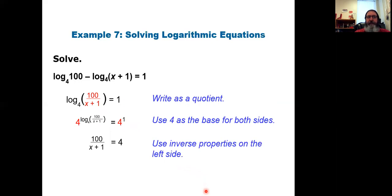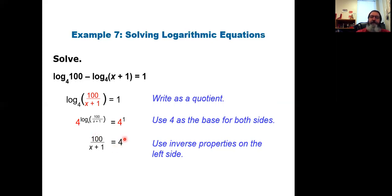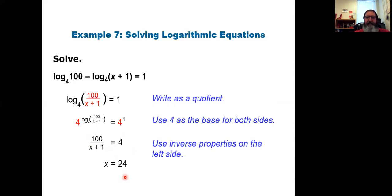The left side is simply 100 over (x plus 1), and 4 to the power of 1 is 4. So I solve 100 over (x plus 1) equals 4. Using cross products or multiplying both sides by (x plus 1), then dividing, we end up with x equals 24.